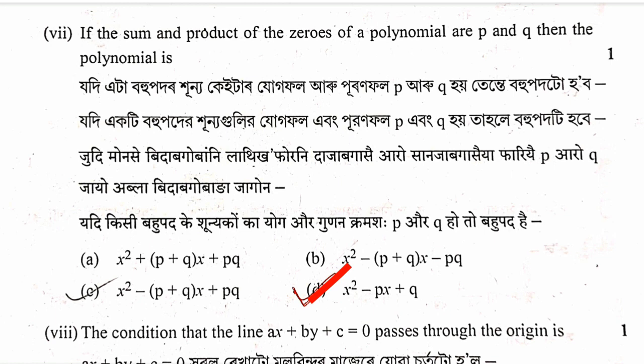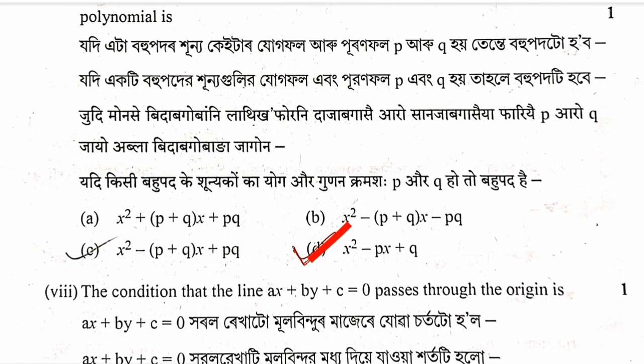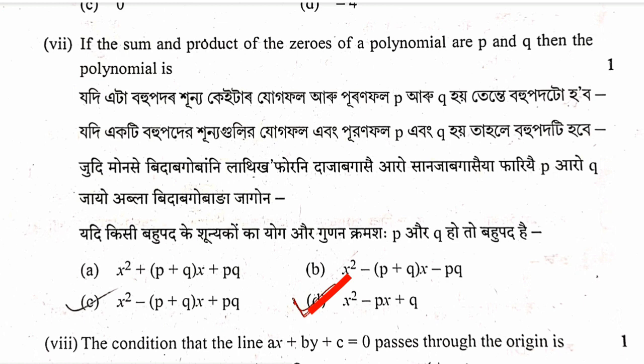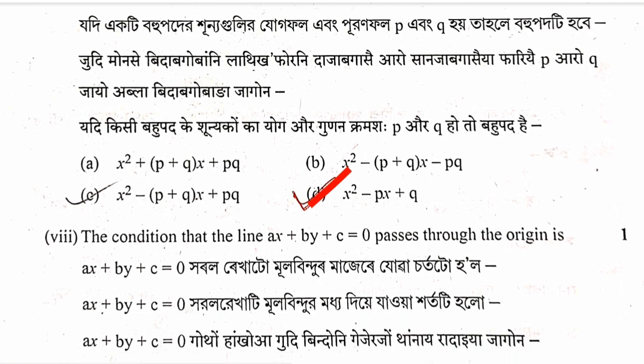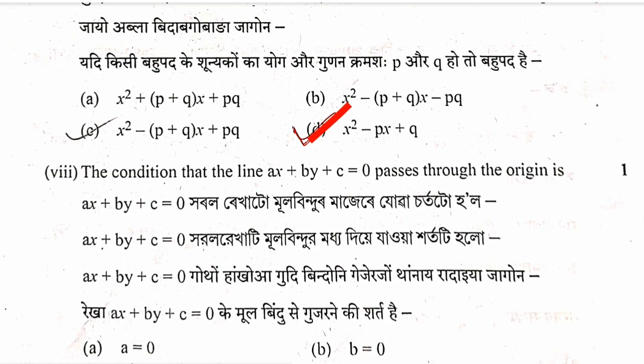Seventh question: If the sum and product of zeros of a polynomial are p and q respectively, then the polynomial is x squared minus px plus q. Option D is correct.